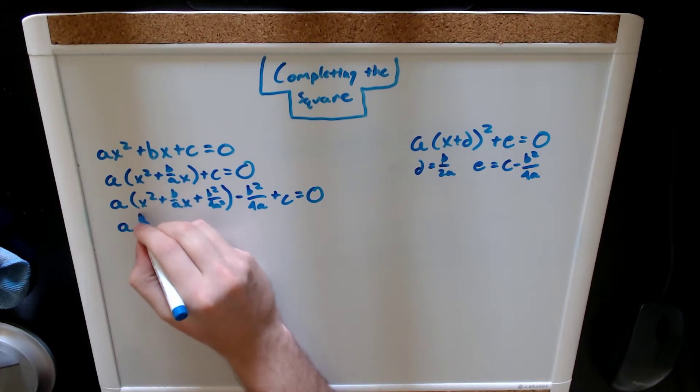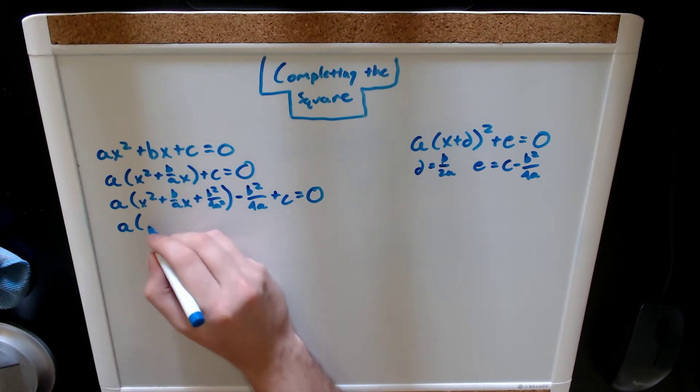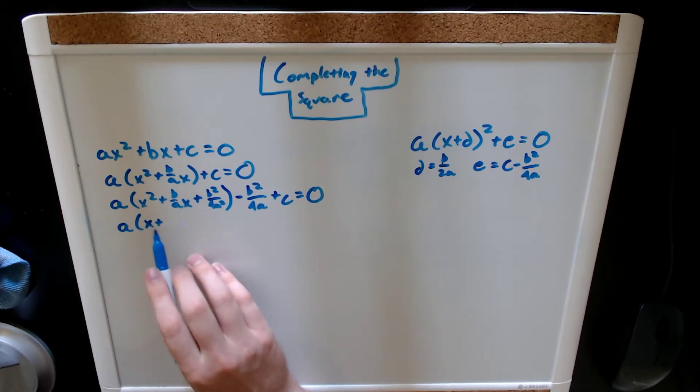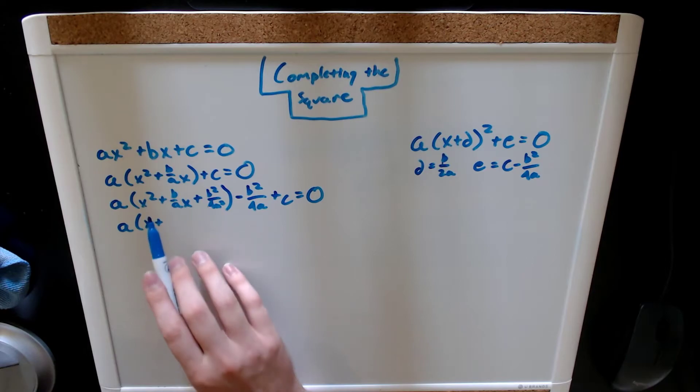Now, we have completed the square inside of these parentheses, and we can take the square root. So, we'll have x plus something. In this case, we have x plus either this term divided by two, or the square root of this term.